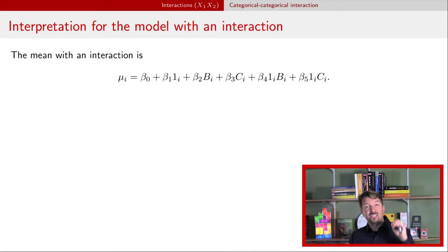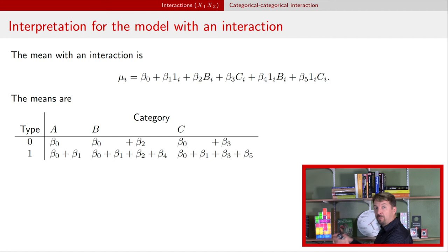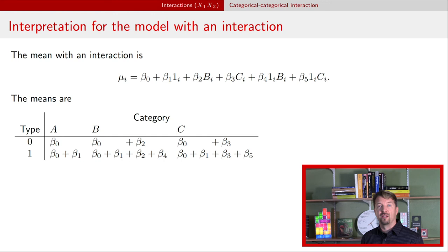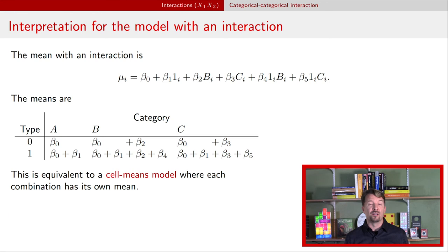In contrast, in the interaction model, that consistent relationship no longer holds. Moving from category A to B adds beta-2 if type is zero, but adds beta-2 plus beta-4 if type is one. Moving from category A to C adds beta-3 for type zero, but beta-3 plus beta-5 for type one. The means for each combination can be whatever they need to be — there's no constrained relationship. This is sometimes called a cell means model because each cell in the table has its own mean.